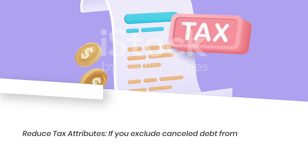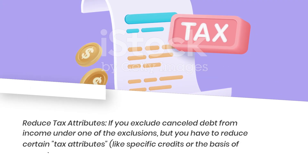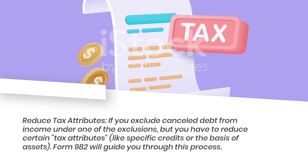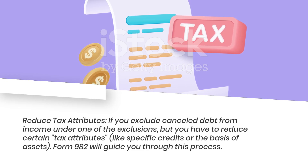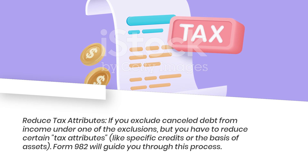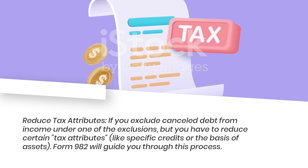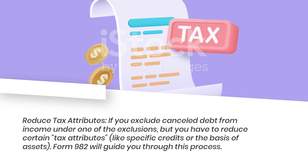Reduce Tax Attributes. If you exclude cancelled debt from income under one of the exclusions, you may still have to reduce certain tax attributes, like specific credits or the basis of assets. Form 982 will guide you through this process.